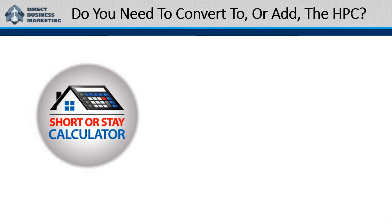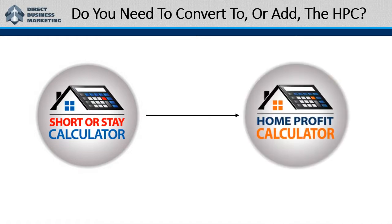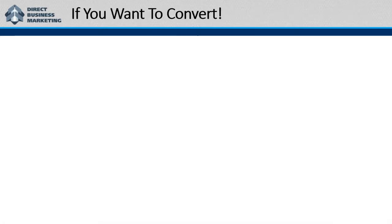When I'm talking about the conversion portion of it, meaning that if your area no longer has short sales, or short sales have dropped dramatically, then you may want to convert. There are some areas that are still producing short sale leads — they're behind the times, like Arizona, Las Vegas, Florida, and California — and they're starting to pick up in these other areas, whether rural land or a metropolitan area. So you can add the HPC if you need to.